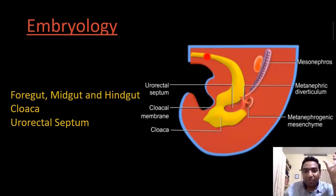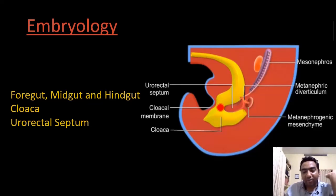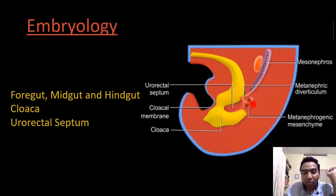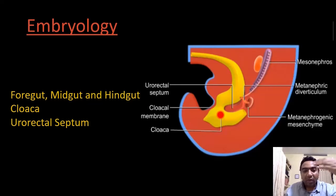The embryology: let me take you to the foregut, midgut, and hindgut. This is the hindgut part. This endodermal tube splits into two by the urorectal septum — the red one here is the urorectal septum. The endodermal tube, which was one, is split into two by the urorectal septum into the urogenital system and the gastrointestinal/rectal system.